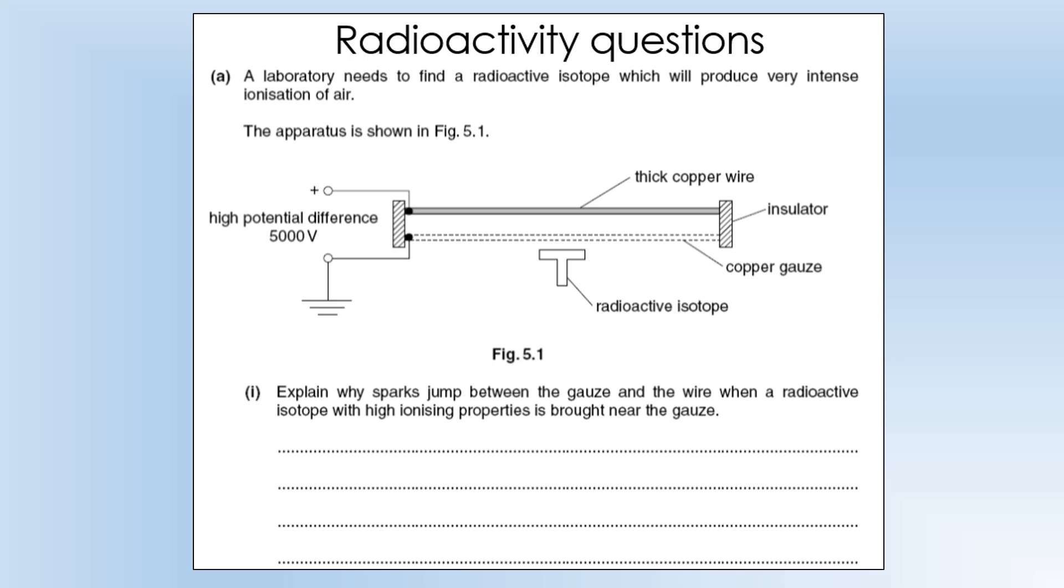The first thing to identify is that sparks are a current essentially. It's a flow of electrical energy between two locations. To get a current we need a potential difference which we've already got. Now we also need charge carriers that allow the actual current to flow.